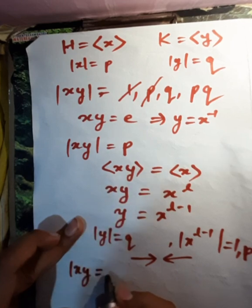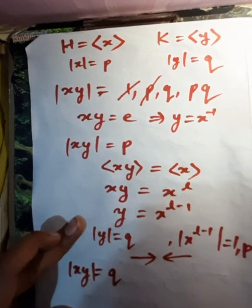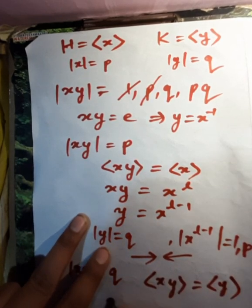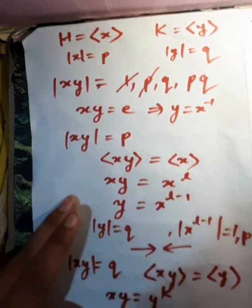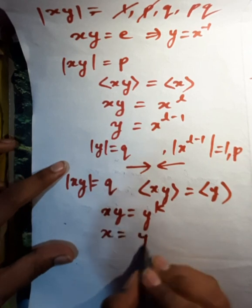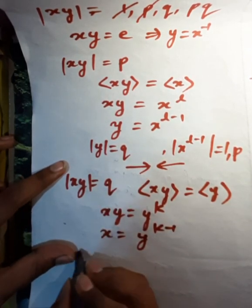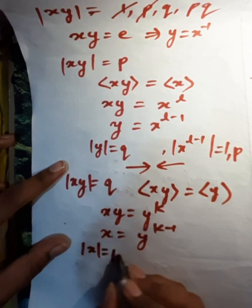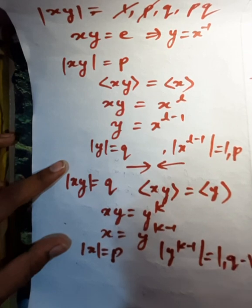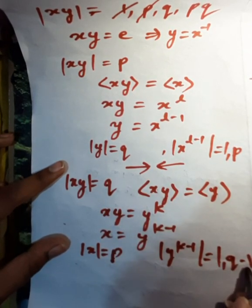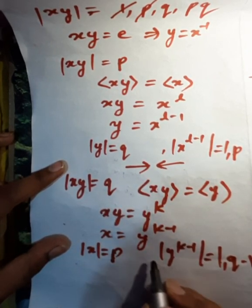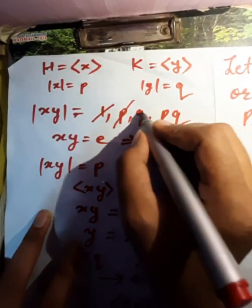If order of xy equals q, then the group generated by xy is same as y, which implies xy is equal to y to the power k for some k, which implies x equals y raised to k minus 1. Now, again by similar argument as above, order of x is p, but order of y to the power k minus 1 is either 1 or q minus 1. And since p is different from 1 and q minus 1, we get this is not possible. So order of xy cannot be q.